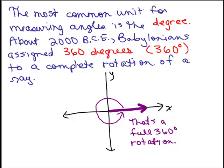The most common unit for measuring angles is the degree. Most people have heard of degrees when measuring angles. There are other ways of measuring angles, but degree is certainly the first that most people hear about. Around 2000 BCE, plus or minus probably a few hundred years, Babylonians assigned 360 degrees to a complete rotation of a ray.